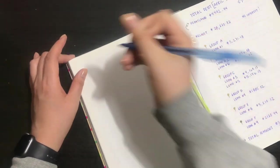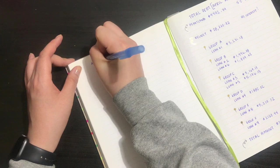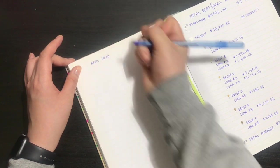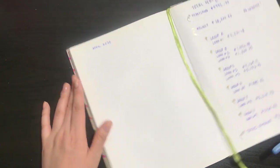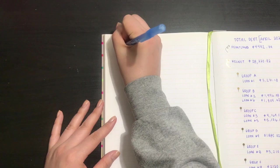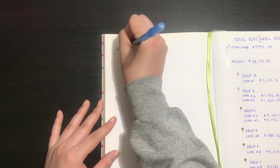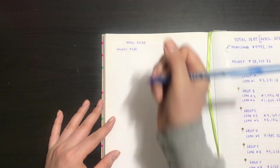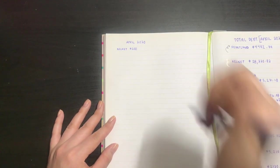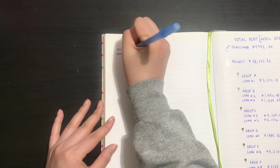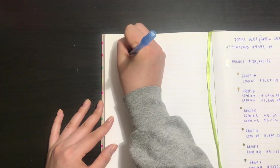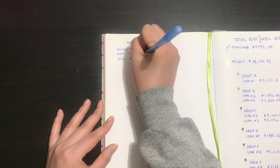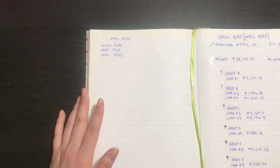For the month of April 2020, I did pay to my regular Nelnet loan $200, and then for my group B I paid $365. So in total for this loan I paid $565.